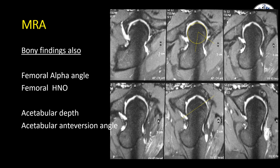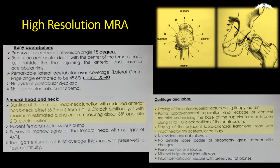MRI arthrography can also be used to define bony abnormality. We can measure the alpha angle in any projection, the head and neck offset ratio, together with acetabular anteversion and acetabular depth. Nowadays we can get a very detailed report delineating the extent of bony and soft tissue problems using the clock position — for example, showing the CAM deformity with its head and neck offset and its extent from one to two o'clock, meaning it is anterior — along with a description of the type and anatomical location of any labral tear.